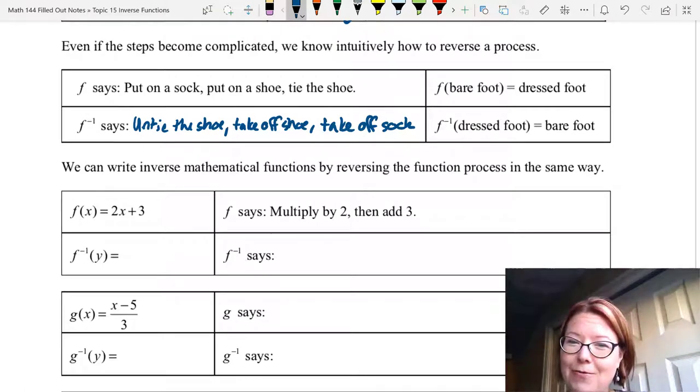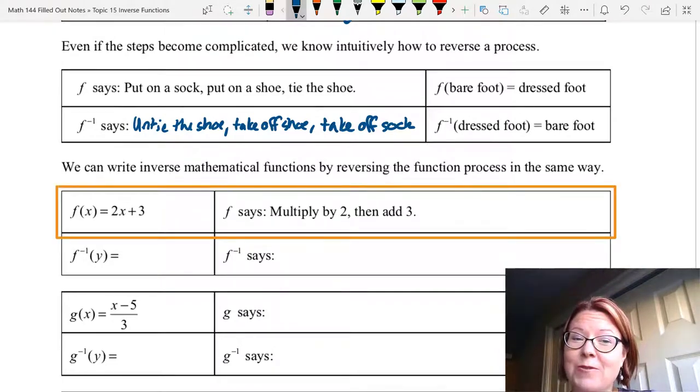We can write inverse mathematical functions by reversing the function process in exactly the same way. For f of x equals 2x plus 3, f is saying multiply by 2, then add 3.